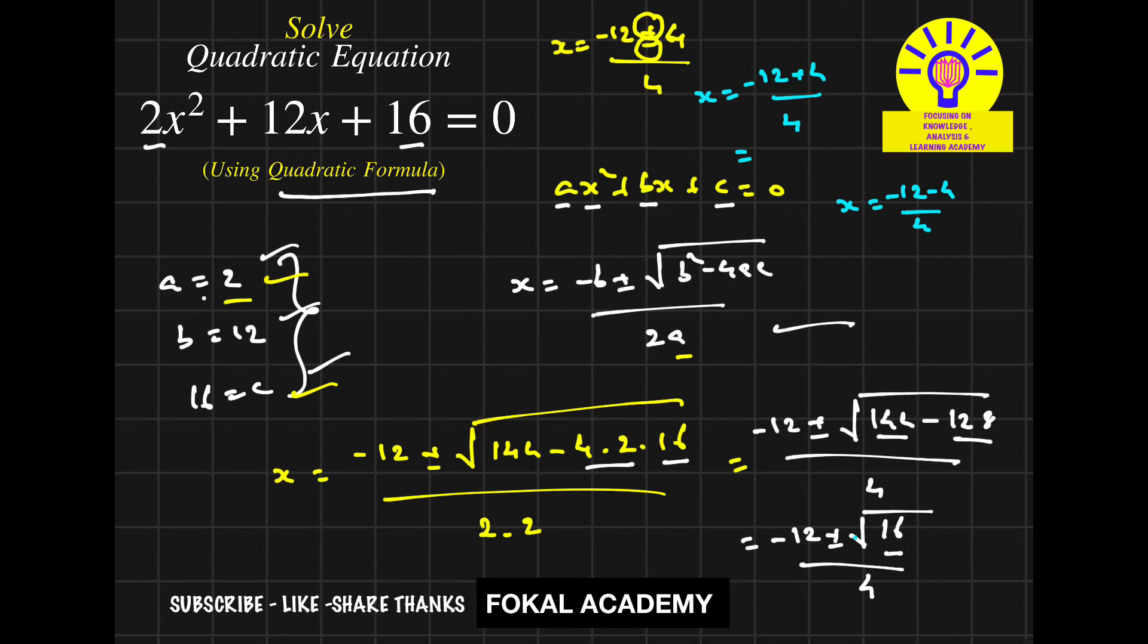Here (-12 + 4)/4 = -8/4 = -2, and (-12 - 4)/4 = -16/4 = -4. So -2 and -4 will be the two roots for the given quadratic equation.